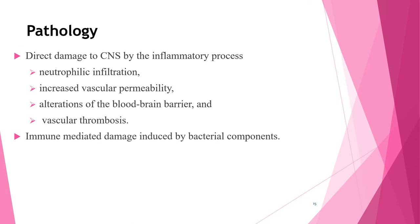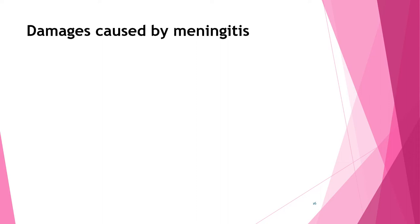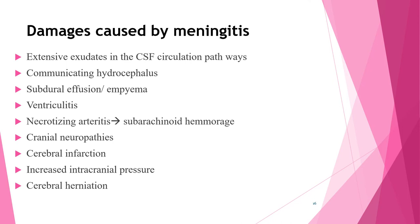Regarding pathology: direct damage to the CNS by the inflammatory process and immune-mediated damage induced by bacterial components are the two key mechanisms. Direct damage includes neutrophilic infiltration, increased vascular permeability, alteration of the blood-brain barrier, and vascular thrombosis. Common complications of the inflammatory pathology include extensive exudates in CSF circulation pathways causing communicating hydrocephalus, subdural effusion or empyema, ventriculitis, necrosis, and arthritis causing subarachnoid hemorrhage.